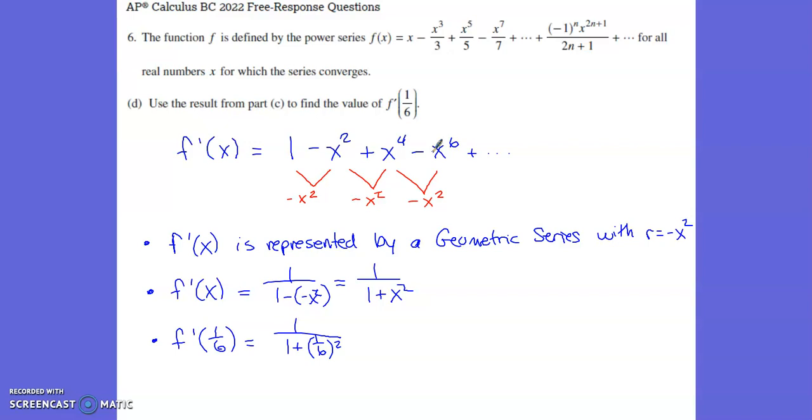And if you think about what happens within a geometric series, I should be able to multiply by a common ratio to get from the first term to the second term. Well, I multiply by negative x squared to get from 1 to negative x squared. If I multiply by that same ratio, negative x squared, I do get to positive x to the fourth. If I multiply by that same ratio, negative x squared, I do get to negative x to the sixth. So this series for f prime of x, it is a geometric series with common ratio negative x squared.